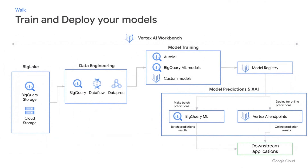Notebooks with Vertex AI Workbench becomes a seamless path into the whole spectrum of data science and machine learning work. From exploring your data in BigQuery or accessing data in Cloud Storage using BigLake, to pre-processing your data in BigQuery, Dataflow, or Spark with Dataproc, to training your model through AutoML, BigQuery ML, or custom models like TensorFlow, PyTorch, scikit-learn, or XGBoost — all of which can be registered into the model registry on Vertex AI. From there, you can do model predictions with built-in explainable AI using BigQuery ML or Vertex AI endpoints, and serve predictions to downstream applications or decision-making.